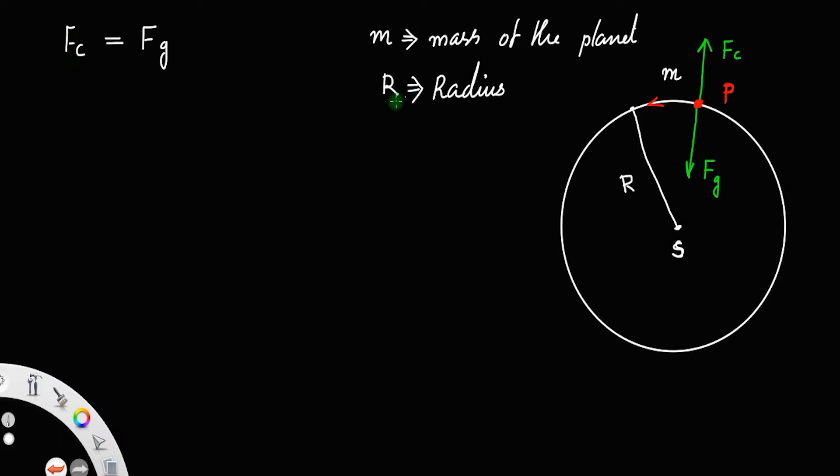We also have the velocity in the linear direction or tangential to the path. Let us call that v. Then we have centrifugal force equals mv squared divided by r. That equals gravitational force, which is G times mass of the sun M times mass of the planet m, divided by r squared.